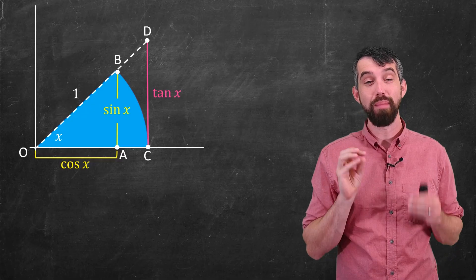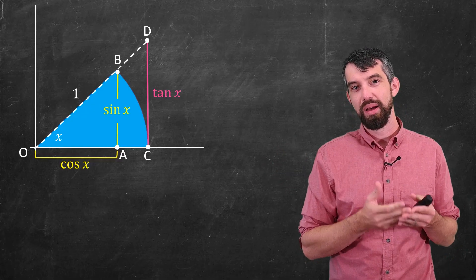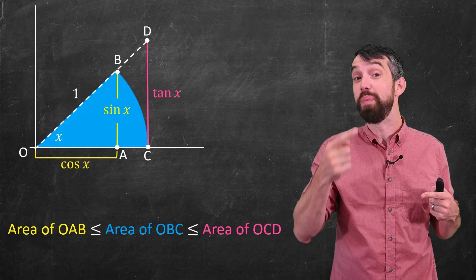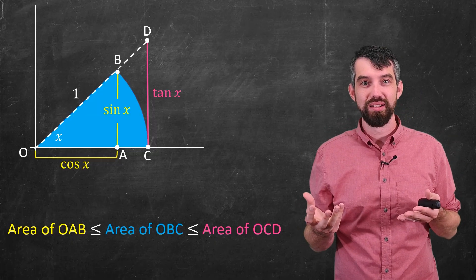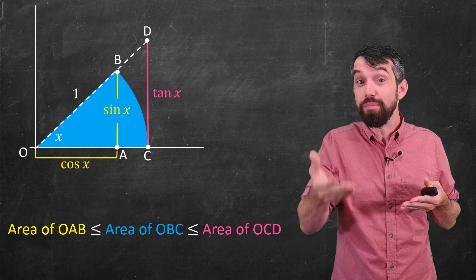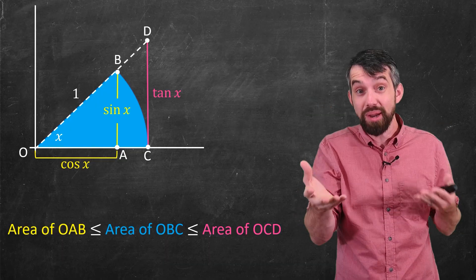So where am I going with this? My goal is to figure out the area of my pizza slice. My claim here is the area of my pizza slice, which I'm going to call OBC, is sandwiched between the smaller triangle and the bigger triangle. So the area of the pizza slice is bigger than OAB, the smaller triangle, but is smaller than OCD, the bigger triangle.